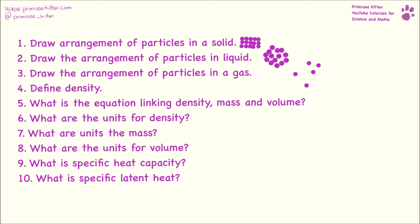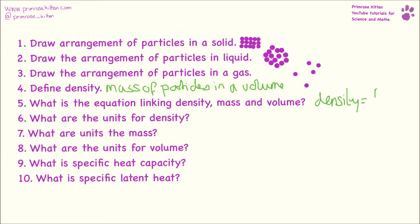Density is how much matter, or how many particles you have in a set volume. The equation linking density, mass, and volume is: density equals mass over volume. The units for density are kilograms per meters cubed. The units for mass are kilograms and the units of volume are meters cubed.